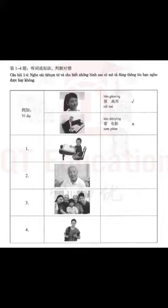第一部分，第一到四题：听词或短语，判断对错。Part 1, Questions 1 to 4: Listen to the words or phrases and decide whether the pictures are right or wrong based on what you hear.